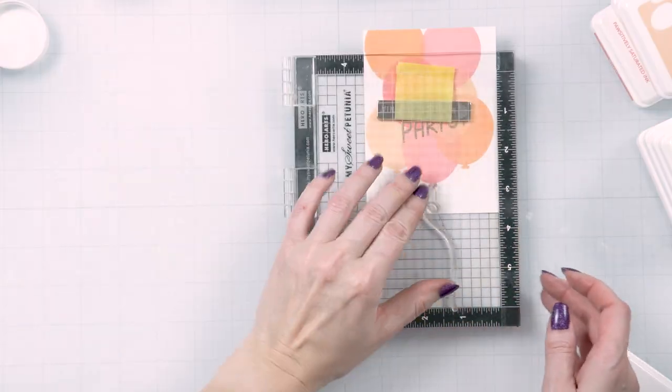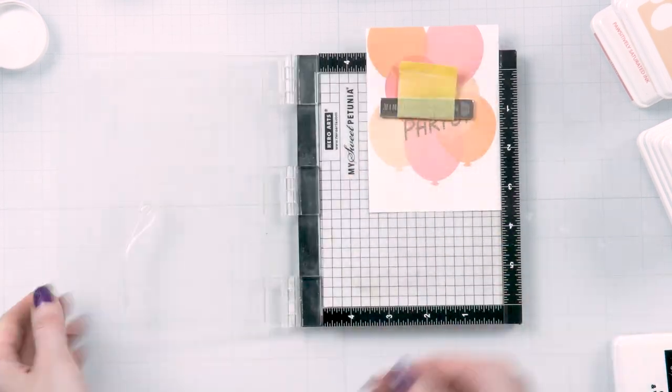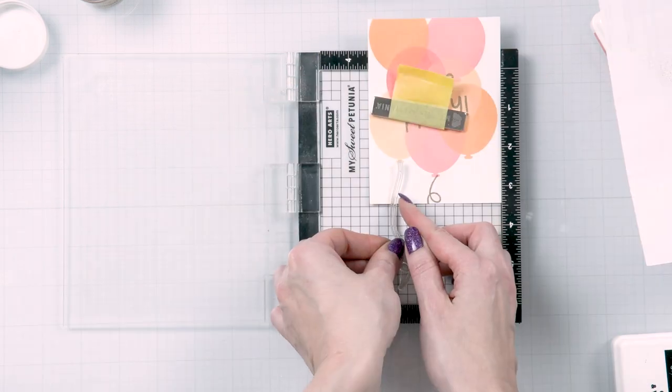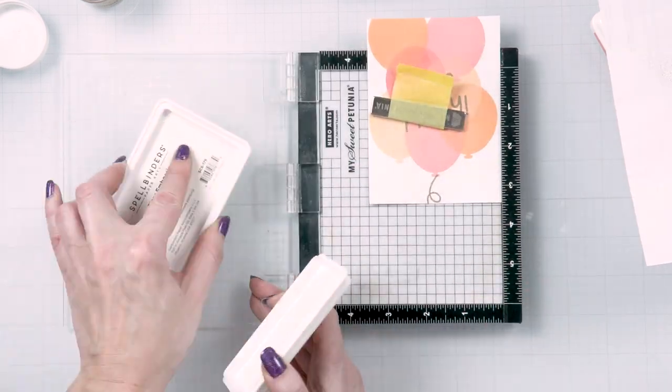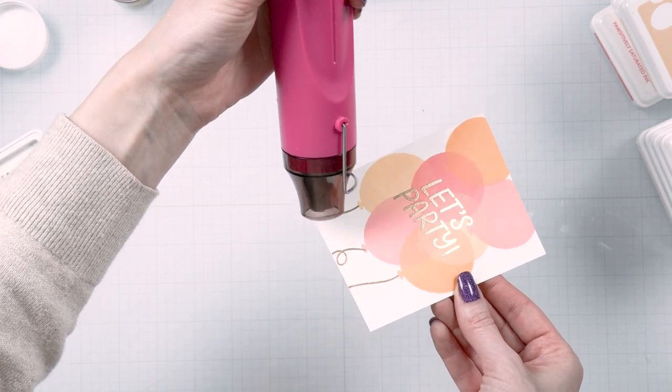I then stamped the balloon strings in the same way. There is just one balloon string image in this set but you can rotate it to have two different string designs on your card and that's what I did. So my strings look a little bit different.